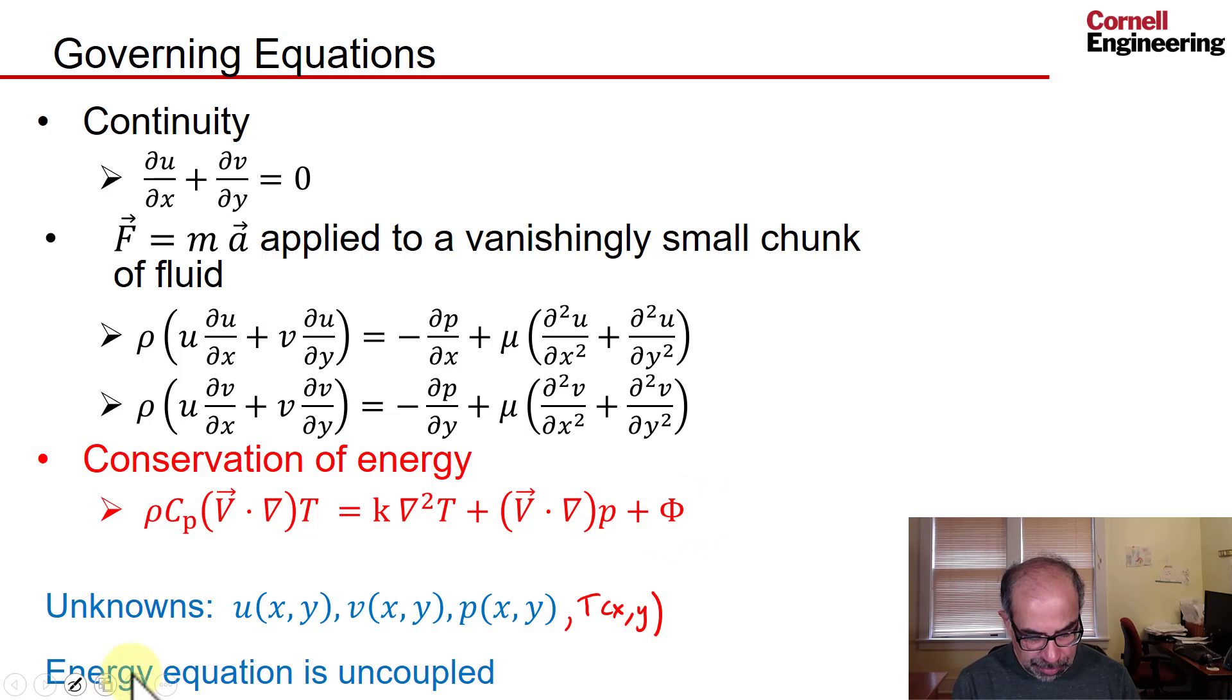Now we can see that the energy equation is uncoupled because density is constant. So we can still solve for velocity and pressure from the first three equations. Then, once using that velocity and pressure field, we can solve for the temperature. If density is varying, then these equations become coupled. Otherwise, they're uncoupled, which means that the addition of heating or cooling doesn't change my velocity or pressure field.